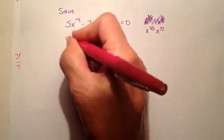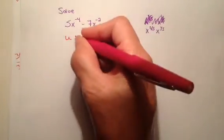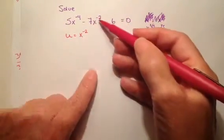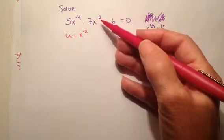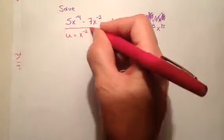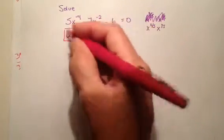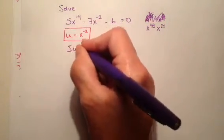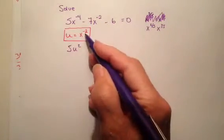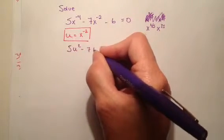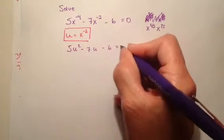I'm going to pick a random letter u and let that equal x to the negative two. It's basically always going to be x to whatever power is here in my middle term. So if I had one-fifth it would be x to the one-fifth. If I rewrite this now, I'm going to get 5u squared, because negative two times positive two is negative four, and minus 7u minus 6 equals zero.